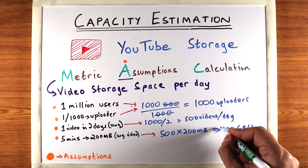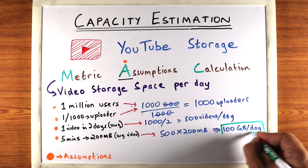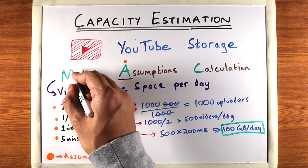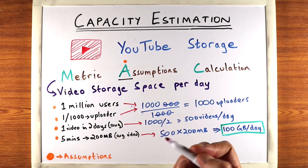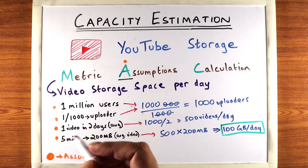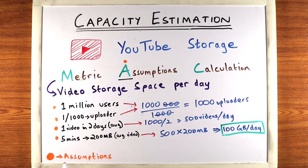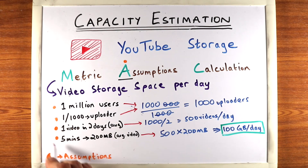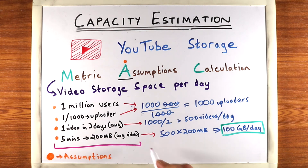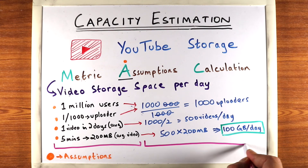So this is our number — the metric we were looking for. You saw how we went through this process systematically: we defined the metric, we listed our assumptions, and we did the calculations according to those assumptions.